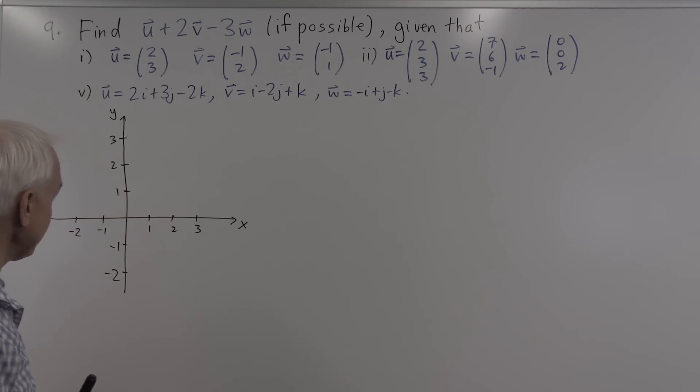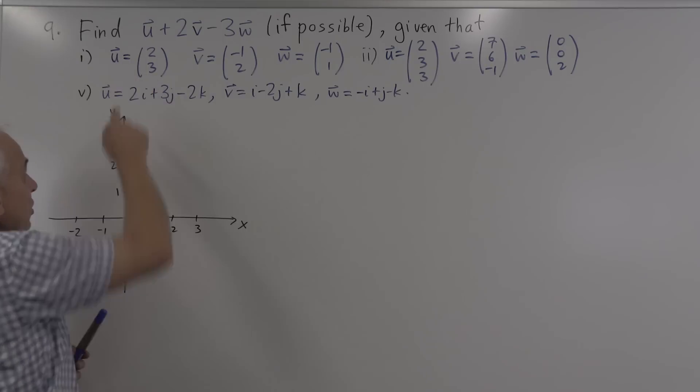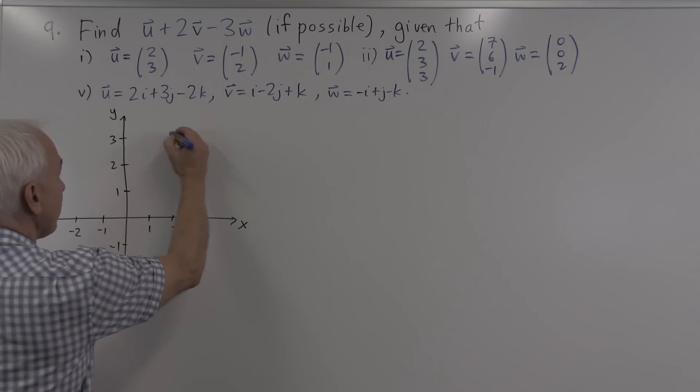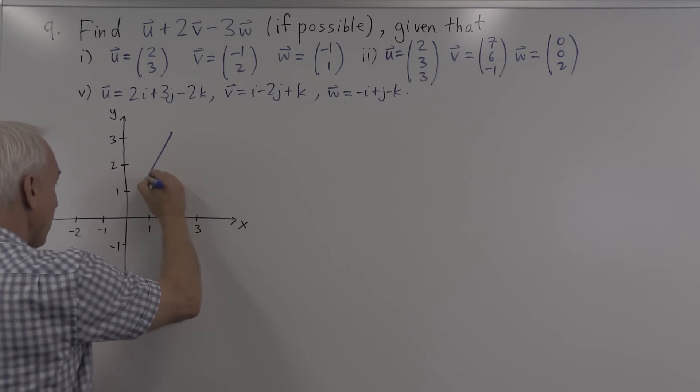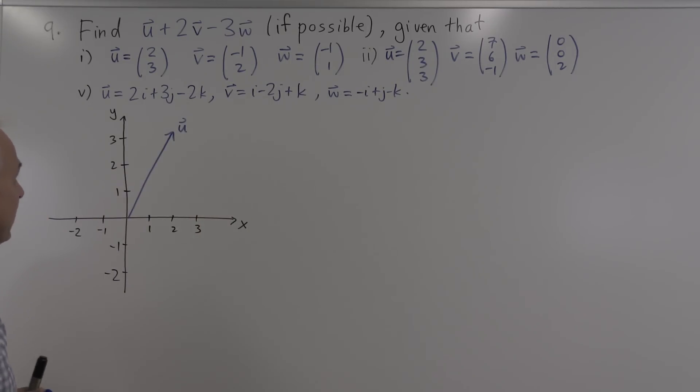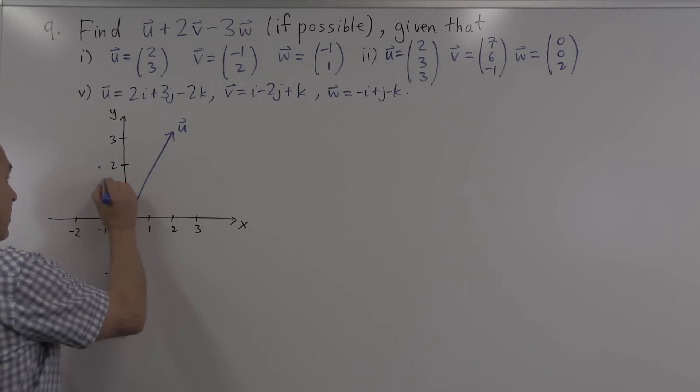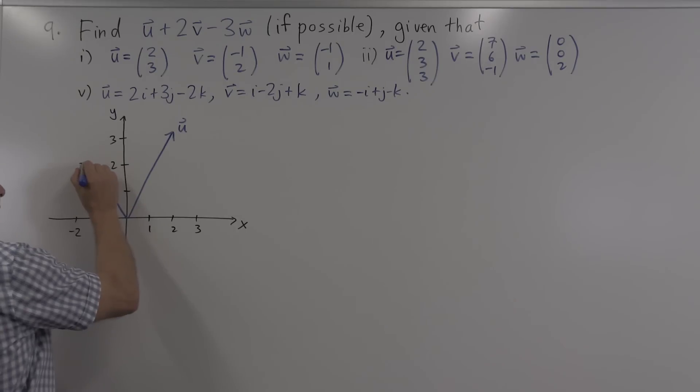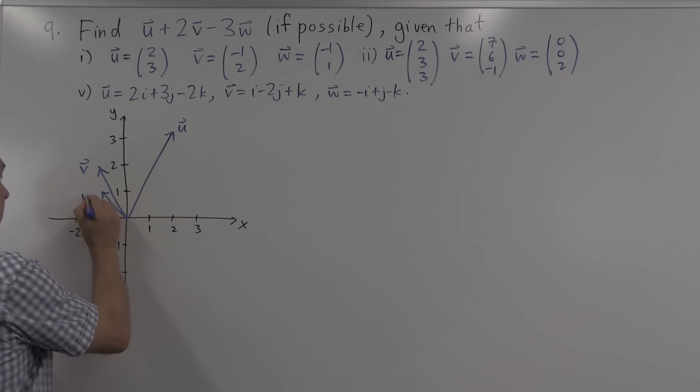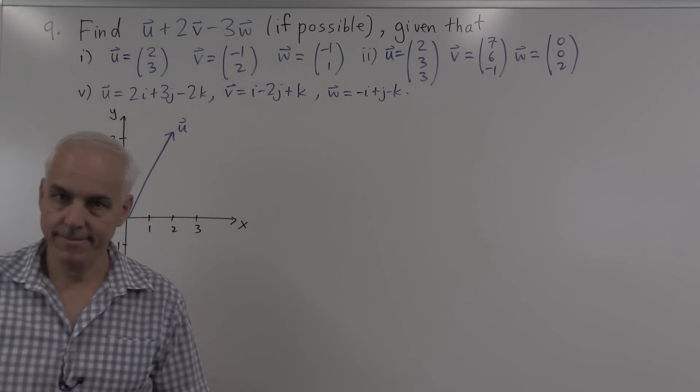Okay, so where are these vectors? Just to give us a visual sense of where we are. The vector u, which is the vector (2,3), is 2 over in this direction, 3 over in that direction. So there is the vector u. And the vector v is (-1,2). So there it is right there. And how about the vector w? That's (-1,1), right here. There's w.